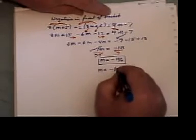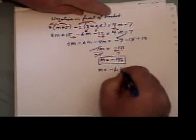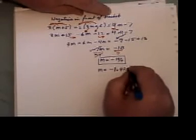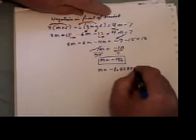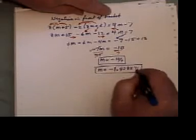Or if you want it as a decimal, negative 1 and 3 sevenths, which is 0.42857, 7, 7, 1, however far you want it to go.